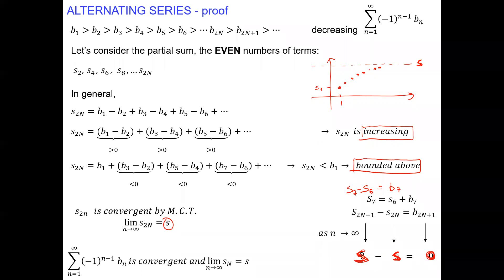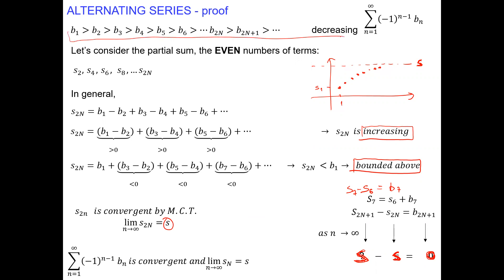What is important: the b sub n formula must be positive; the limit must be zero at infinity; and b sub n must be decreasing. Because if the terms are not decreasing, the proof breaks down. With these three conditions, the sum will exist as a finite number.